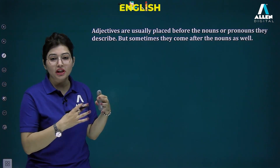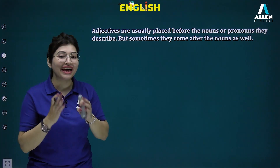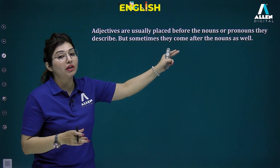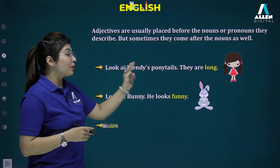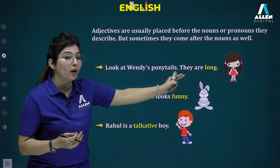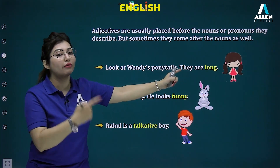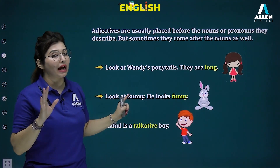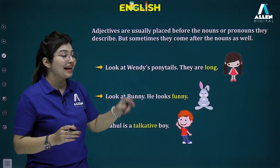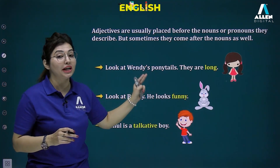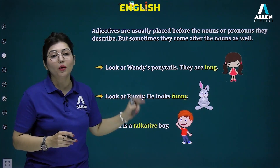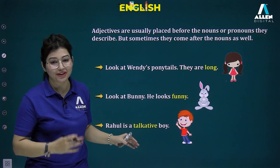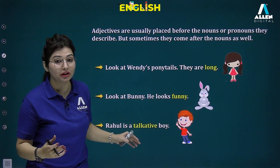Adjectives are usually placed before nouns, as we have seen in all the Harry Potter examples. But sometimes they come after the noun as well. For example, 'look at Wendy's ponytails, they are long' — here 'long' is written after the noun. When an adjective comes after a noun it is known as a predicative adjective, and when written in front of a noun it is known as an attributive adjective — like 'quiet space', 'amazing view', 'mesmerizing world'.